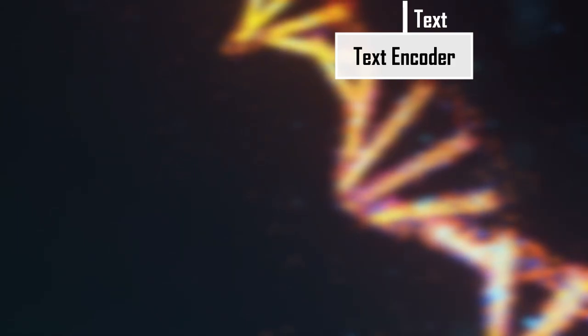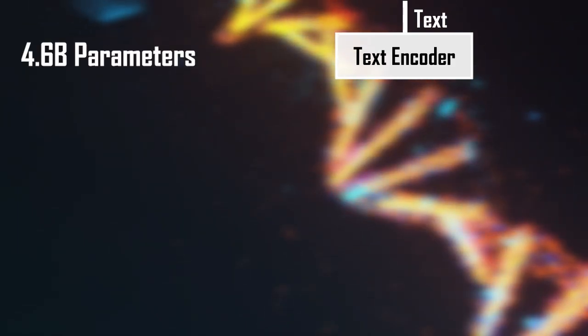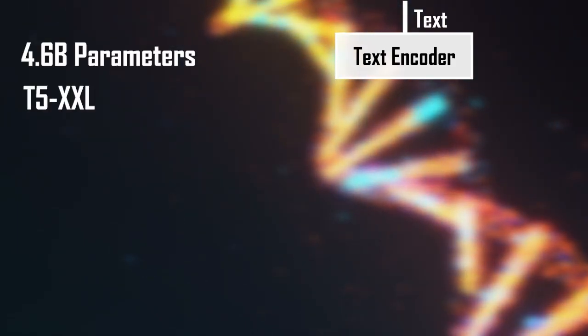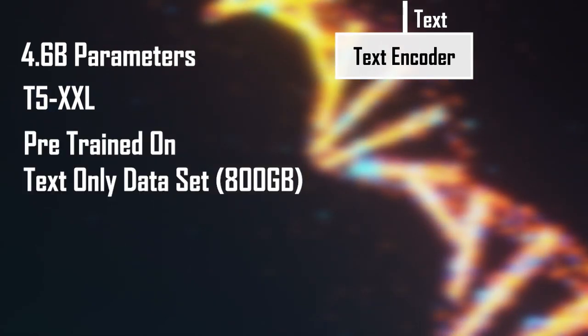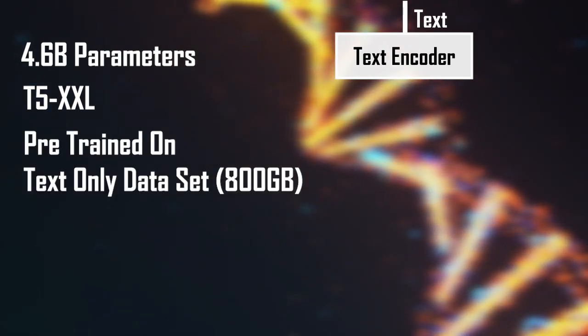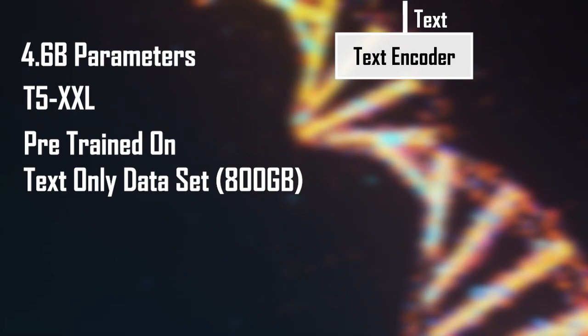Now let's look at how Imagen generates the images. Unlike DALL-E2, Imagen uses a 4.6 billion parameter transformer language model known as T5-XXL, pre-trained on a text-only dataset, to encode the given text prompt into a series of text embeddings.